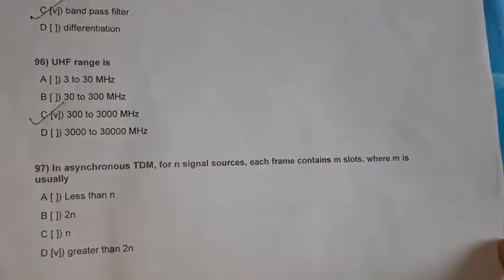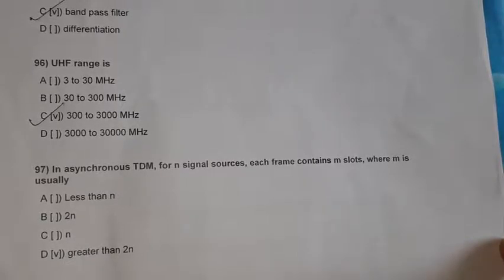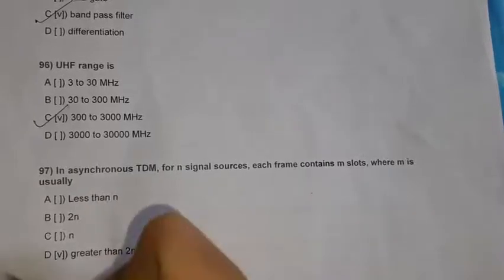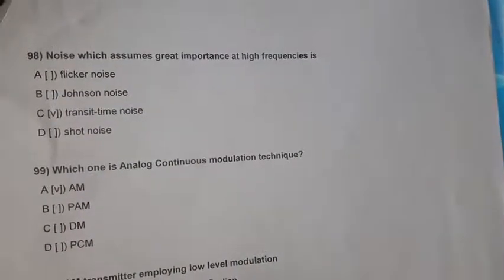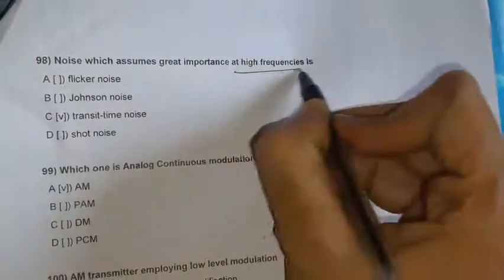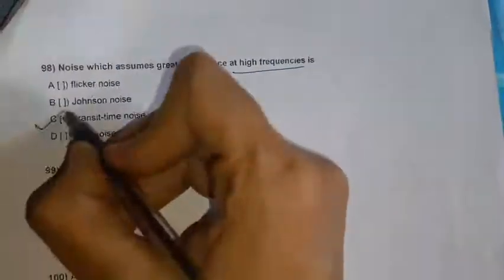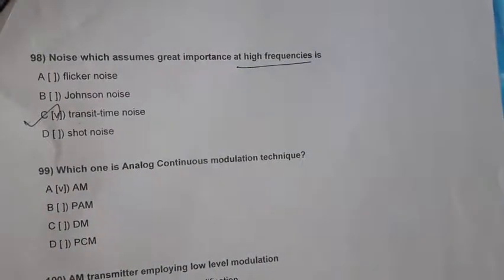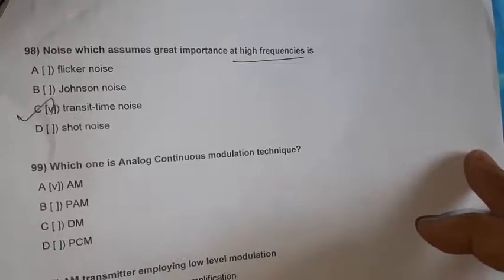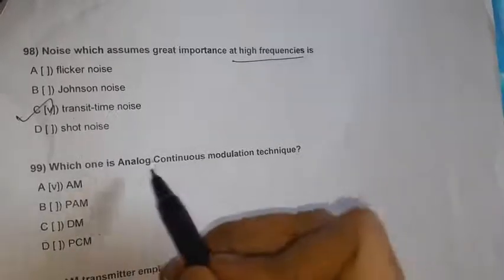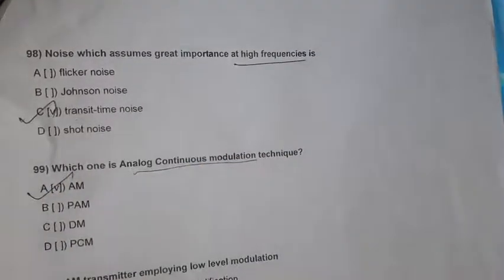Question 97: In asynchronous TDM for N signal sources, each frame contains M slots where M is usually greater than 2N — option D. Question 98: Noise that assumes greater importance at high frequencies is transit time noise at microwave frequencies. Question 99: An analog continuous modulation scheme is amplitude modulation AM.